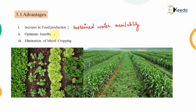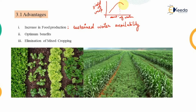The second advantage is achieving optimum benefits. There is a curve between the amount of water added and the yield of the crop. Plotting the amount of water on the x-axis and yield on the y-axis, with increasing water the yield increases — but only up to a certain limit. After that, with further increase in water, the yield decreases. We need to achieve this optimum level of water availability during irrigation to yield optimum benefits to the crops.